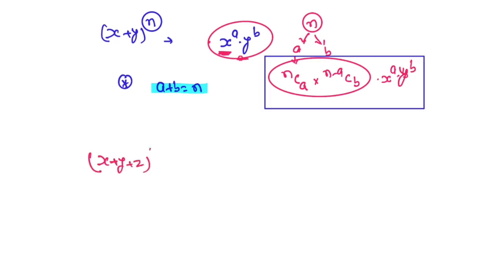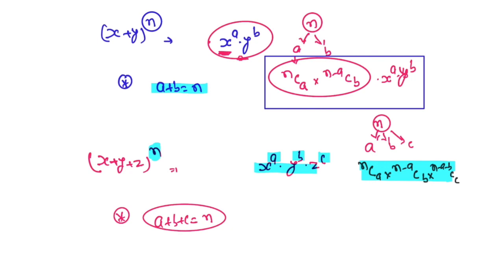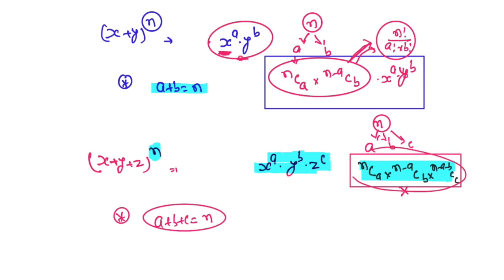The same concept applies with three variables. For a term x^a · y^b · z^c, the condition is a + b + c = n, because this is power distribution — we divide n into three groups a, b, c. By permutation and combination, the coefficient is nCa · (n−a)Cb · (n−a−b)Cc. Simplifying, this is just n! divided by (a! · b! · c!).